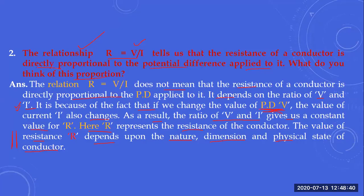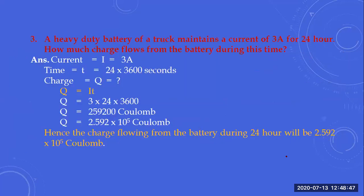Welcome back. We are discussing current electricity, most important questions. Here is a problem: a heavy-duty battery of a truck maintains a current of 3 amperes for 24 hours. How much charge flows from the battery during this time?